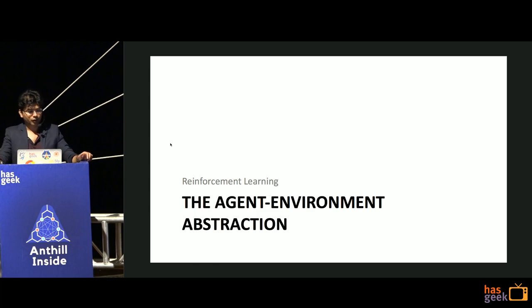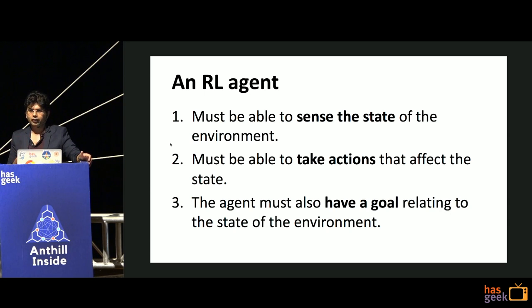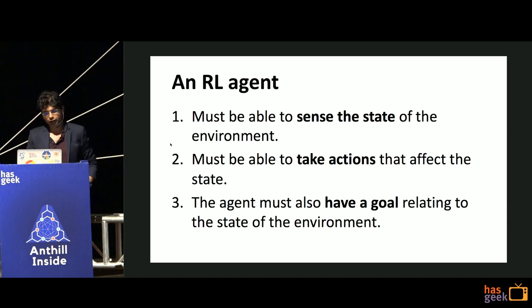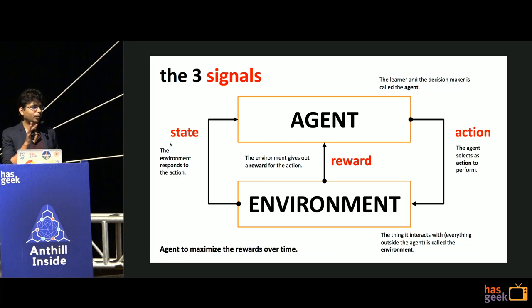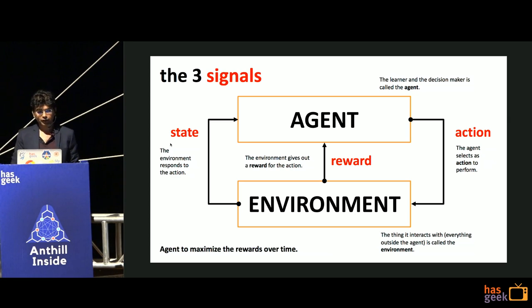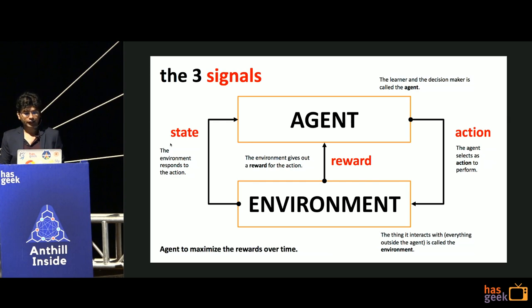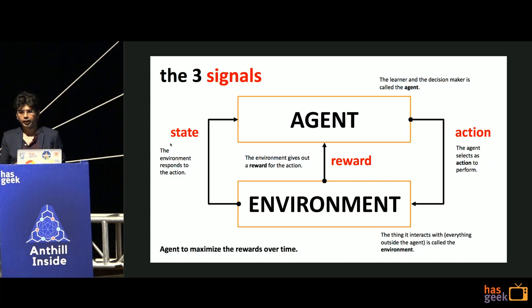So let's dig deep. We want to formulate this agent-environment interaction. An RL agent must sense the environment's state, take actions that affect it, and have a goal. Try to memorize this diagram - we'll keep using it. The agent is the learner and decision maker, and the environment is everything it interacts with outside the agent. The boundary between agent and environment depends on the problem.